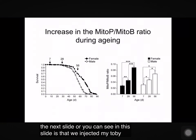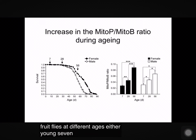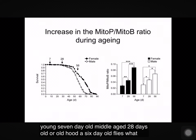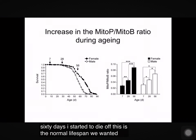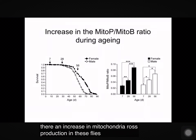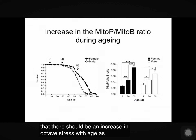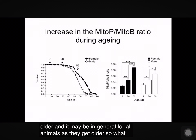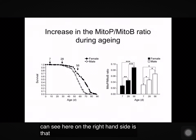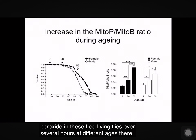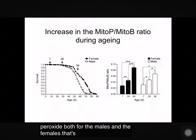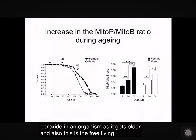We injected MITOB into fruit flies at different ages: young 7-day-old, middle-aged 28-days-old, or old 56-day-old flies. As you can see from the survival curve, after 50 to 60 days they start to die off — their normal lifespan. We wanted to see whether there was an increase in mitochondrial ROS production as they get old, because the mitochondrial oxidative stress theory of aging implied there should be an increase in oxidative stress with age. When we measure the MITOBOL to MITOB ratio — that is, mitochondrial hydrogen peroxide in these free-living flies over several hours at different ages — there is an increase in hydrogen peroxide for both males and females. This is the first time we've been able to demonstrate an increase in hydrogen peroxide in an organism as it gets older, in a free-living organism doing its normal activity.